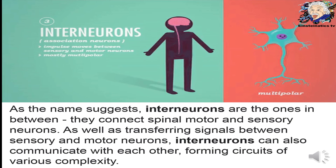The third type is interneurons, also known as association neurons. As the name suggests, interneurons are the ones in between — they connect the spinal motor and sensory neurons and serve as a passageway for transferring signals between sensory and motor neurons. They can also communicate with each other, forming circuits of various complexity.